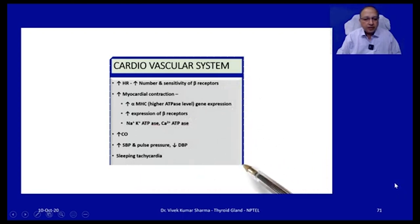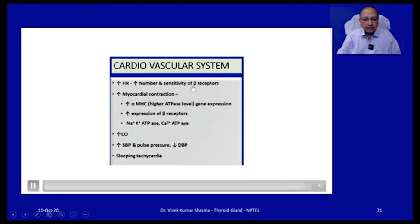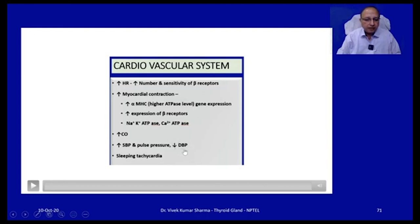Many CNS effects are due to increased responsiveness to catecholamines, which are active only in the presence of thyroid hormones. In hypothyroidism, the most affected brain areas are the basal ganglia, cerebral cortex, and cochlea; deficiency during childhood causes mental retardation, deaf-mutism, and muscle rigidity. Thyroid hormone causes increased heart rate by increasing the number and sensitivity of beta receptors, increases inotropic effect by increasing alpha-MHC gene expression (which has higher ATPase activity), and enhances sodium-potassium ATPase and calcium ATPase pump activity. It increases cardiac output and systolic blood pressure, while diastolic blood pressure may decrease due to cutaneous vasodilation from higher body temperature and decreased peripheral vascular resistance, resulting in increased pulse pressure.